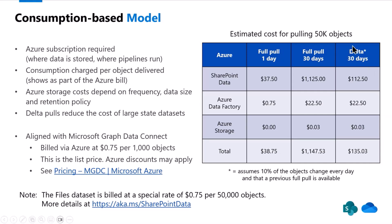We provide something called Delta. If you want, you can do a Delta data set that gets you just the difference from a previous pull. For instance, last week I got a full list of all my sites. Then this week I say: get me a list of things that changed since I last pulled that data. It will show you just the sites that are new, deleted, or changed. This allows you to pull less data and keep up to date without pulling the full data set every time.